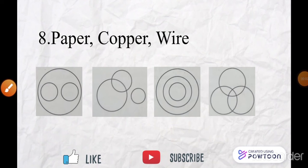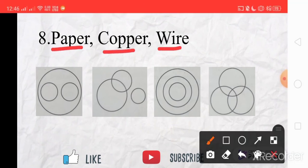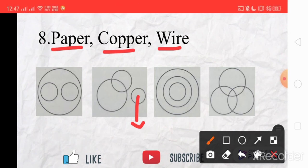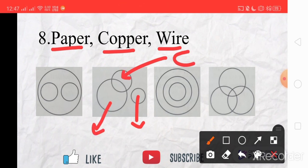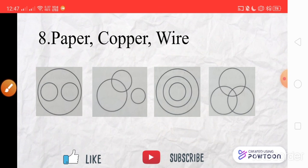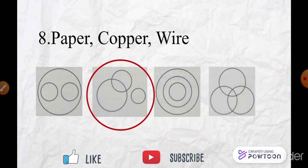The eighth set of words are Paper, Copper, and Wire. No wires are made of paper and no paper is made of copper or wire, so Paper is represented by a completely separate circle. Copper is used in some wires, while aluminum, tin, etc. are used in other wires. So Copper is a subset shown inside the Wire circle, and Paper is a separate circle outside. The right answer is B.